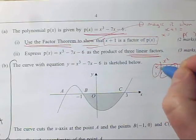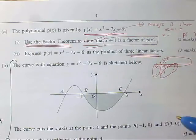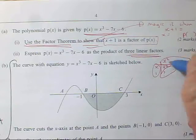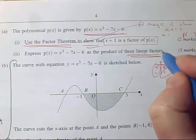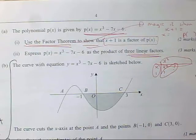Once you've got X plus one times another quadratic factor here, you're then going to factorize this quadratic, and you're going to end up with a product of three linear factors, like what they say.